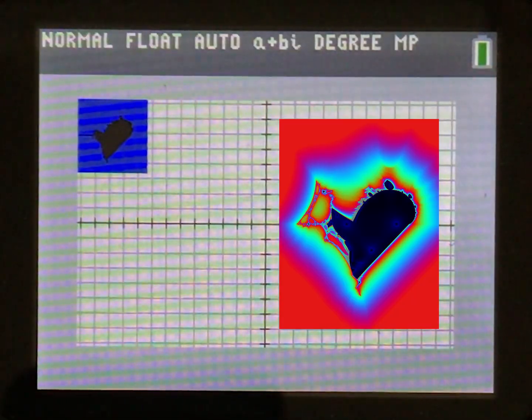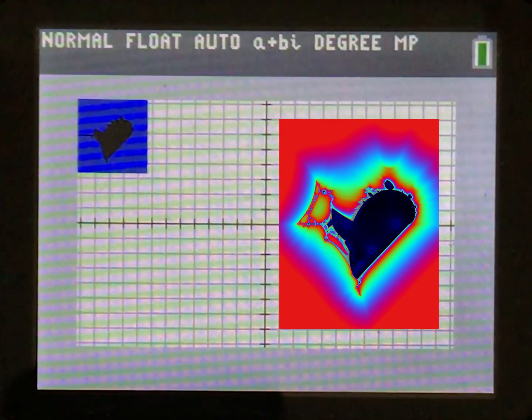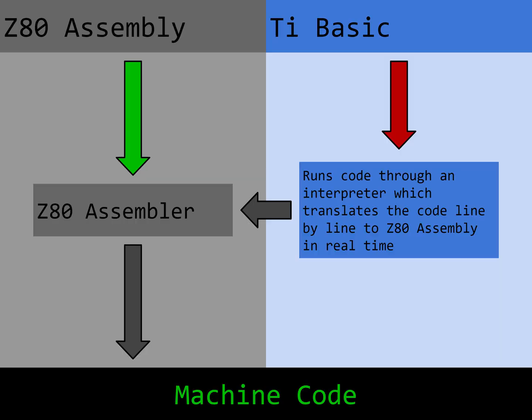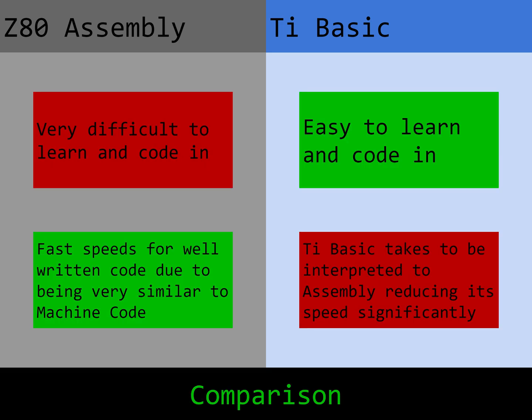Changing the formula a bit gives this image. The reason why it takes a long time to run through the calculations is because TI Basic takes time to be interpreted line by line to machine code in real time. If I were to code this in Z80 Assembly, it would be more difficult to code, but the reward would be speeds 20 times faster.